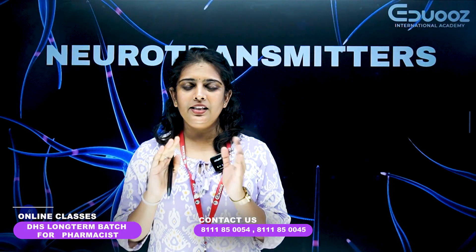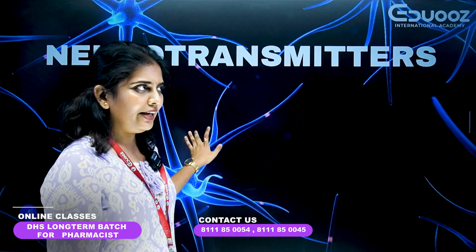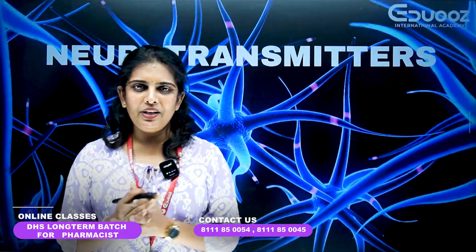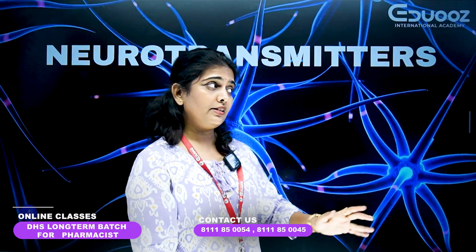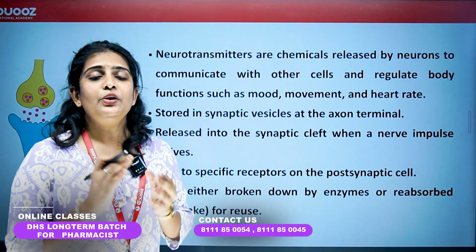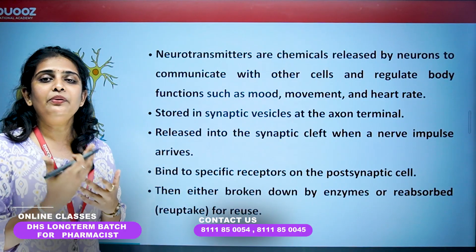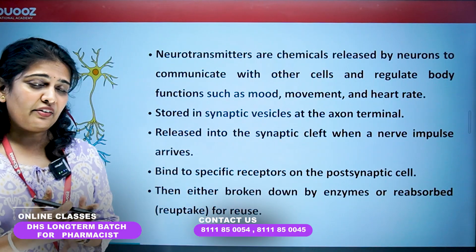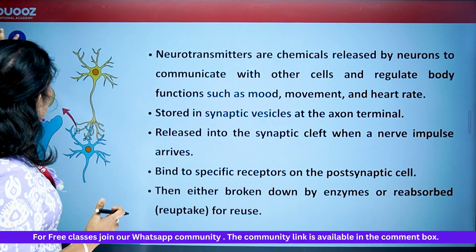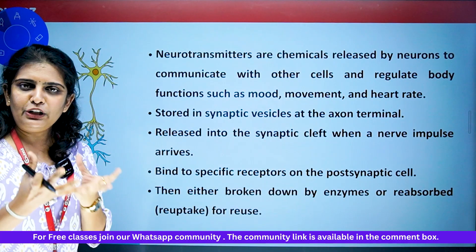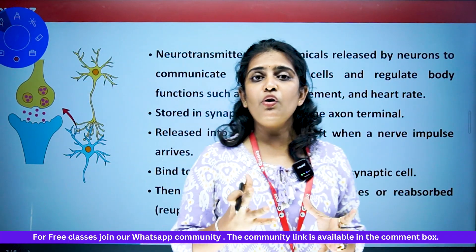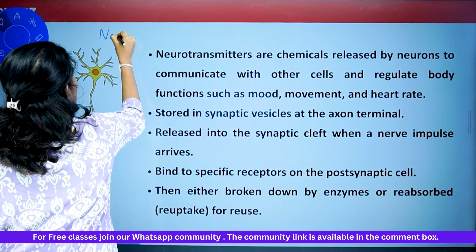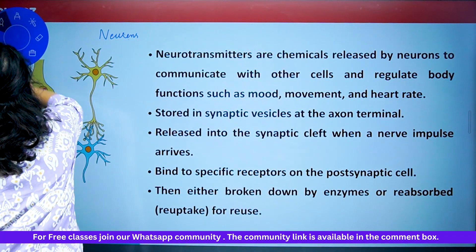Neurotransmitters are released by neurons to communicate with each other and regulate body functions such as mood, movement, and heart rate. Neurons release particular types of chemicals, and that is why we have neurotransmitters. Neurons are the structural and functional unit of the nervous system.